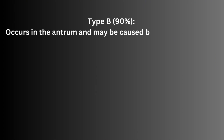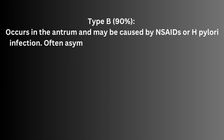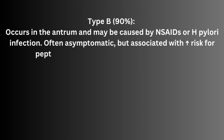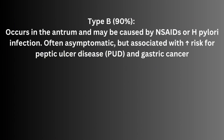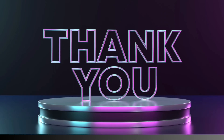Chronic gastritis Type B occurs in the antrum and may be caused by NSAIDs or H. pylori infection. It is often asymptomatic but is associated with an increased risk of peptic ulcer disease and gastric cancer. Thank you for watching my video.